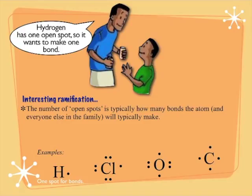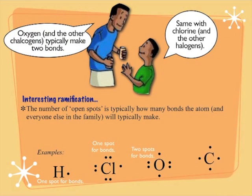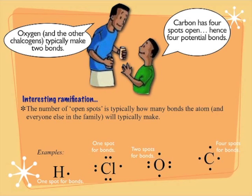Hydrogen has one open spot. It always makes one bond. You won't see hydrogen making a double bond or have an unshared pair. Halogens will typically make one bond. When you're dealing with only two atoms, that's when you see the most exceptions. Oxygen, you're typically going to see with two bonds. And then carbon, you're going to see with four bonds.